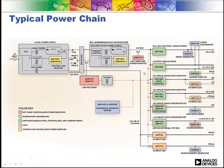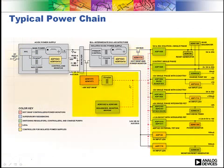Here's a typical power chain with the AC wall plug on the left, through an intermediate bus voltage down to the point of load with POL devices on the right. You can also see various hot swaps, sequencing devices, and LDOs. For the purpose of this video we're going to focus on this area here.